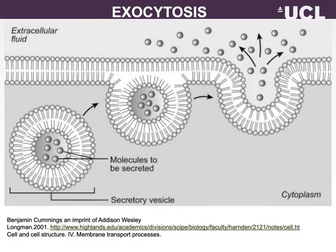Exocytosis is the process by which cells excrete waste and other large molecules from the cytoplasm to the cell exterior, and therefore is the opposite of endocytosis. Exocytosis generates vesicles referred to as transport vesicles. In exocytosis, intracellular vesicles fuse with the plasma membrane and release the aqueous sequestered contents to the outside, while the vesicle membrane hydrophobic components — mostly lipid and proteins — are added to the plasma membrane. Steady-state composition of the plasma membrane results from a balance between endocytosis and exocytosis.